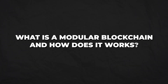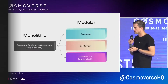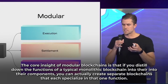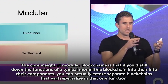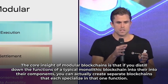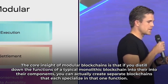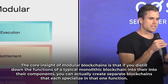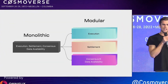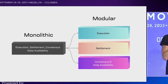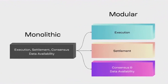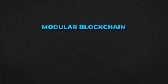What is a modular blockchain and how does it work? The core insight of modular blockchains is that if you distill down the functions of a typical monolithic blockchain into components, you can actually create separate blockchains that each specialize in that one function. And then those blockchains can be integrated together to achieve even better scalability and all different kinds of properties that you couldn't do in a monolithic paradigm.